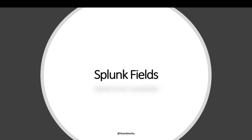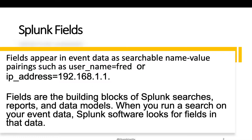Let's understand what Splunk fields are. Fields appear in event data as searchable name-value pairings, such as user_name equal to fred, or ip_address equal to 192.168.1.1. Here, username is a field and fred is a value of the username field. IP address is a field and 192.168.1.1 is a value of IP address. Fields are the building blocks of Splunk searches, reports, and data models. When you run a search on your event data, Splunk software looks for fields in that data.